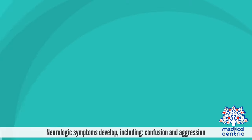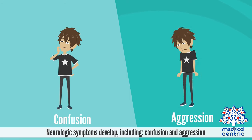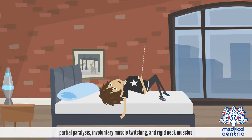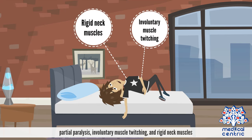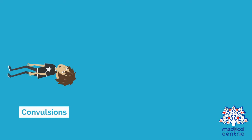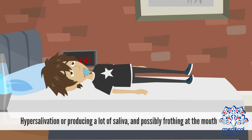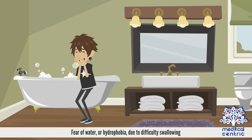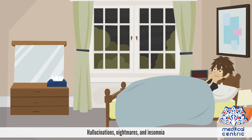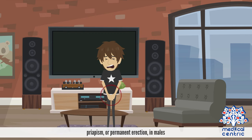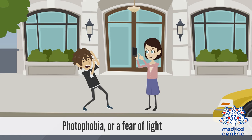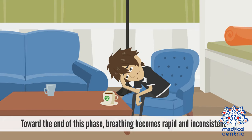During the acute neurologic period, neurologic symptoms develop, including confusion and aggression, partial paralysis, involuntary muscle twitching and rigid neck muscles, convulsions, hyperventilation and difficulty breathing, hypersalivation or producing a lot of saliva and possibly frothing at the mouth. Other symptoms include fear of water or hydrophobia due to difficulty swallowing, hallucinations, nightmares and insomnia, priapism or permanent erection in males, and photophobia or a fear of light. Toward the end of this phase, breathing becomes rapid and inconsistent.